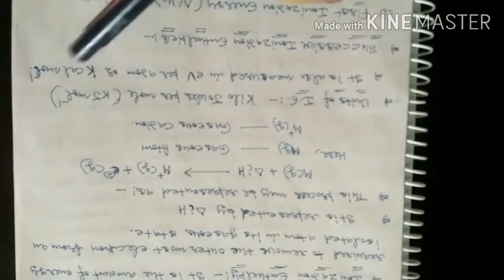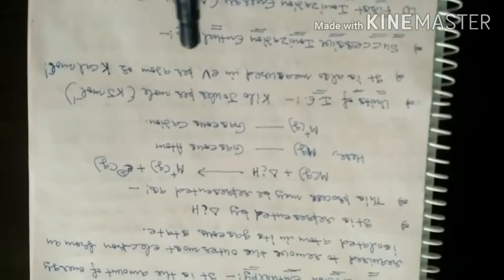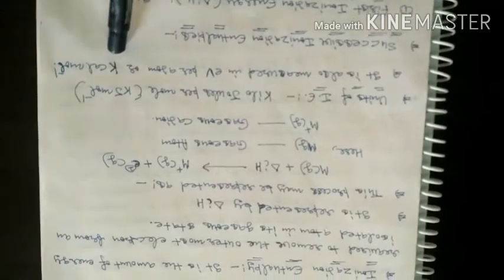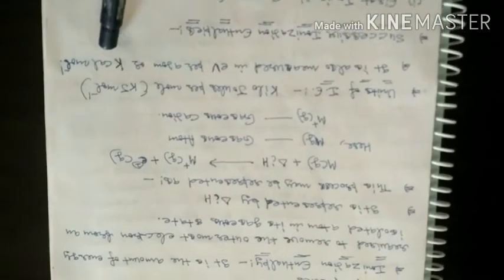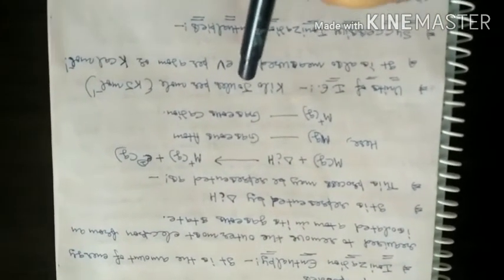The units of ionization enthalpy are kJ per mole or electron volts. These are the units used to measure ionization enthalpy: kJ per mole and electron volts.